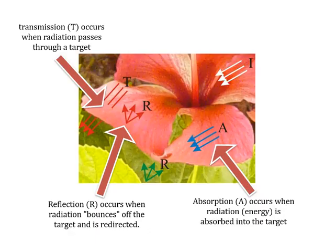Consider the example of a flower. When sun rays are incident upon it: transmission occurs when radiation passes through the target; reflection occurs when radiation bounces off the target and is redirected; and absorption occurs when radiation is absorbed into the target. Some energy is transmitted through the petals — you can see light passing through them — some is reflected back, and plants absorb energy for the photosynthesis process, through which they get their food.